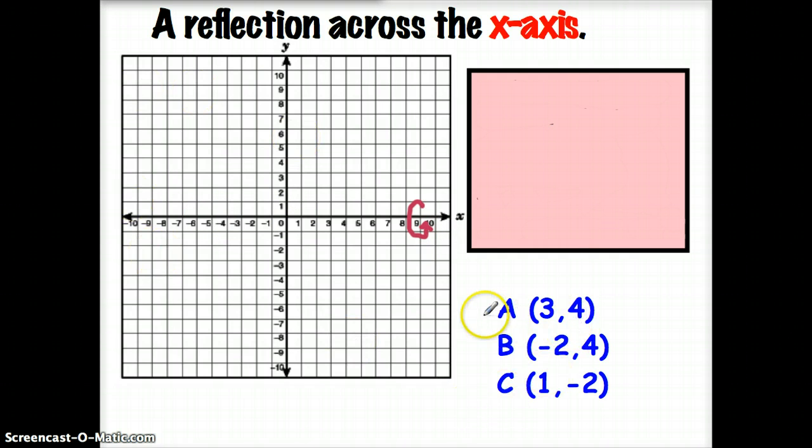Let's look at our coordinates. The first ordered pair is A(3,4), so I'm going to go over 3, up 4. Point B is (-2, 4). And point C is (1, -2).